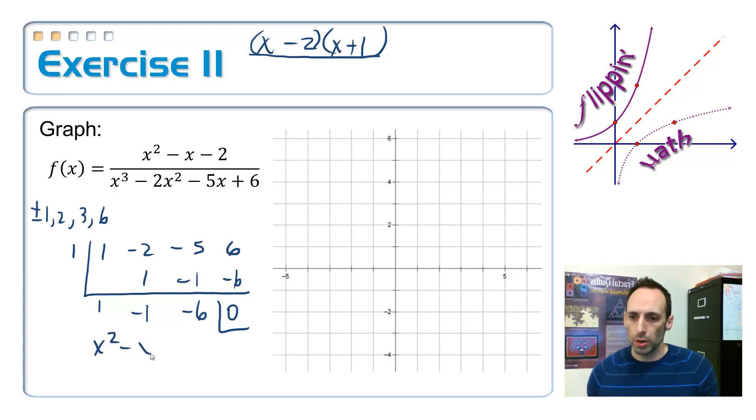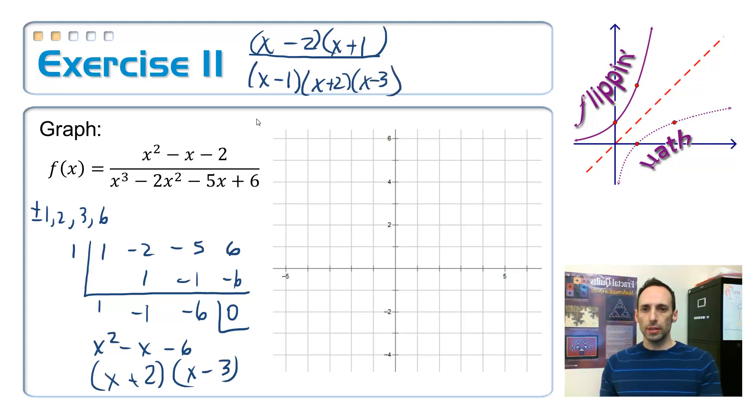Okay, so what I've got left over, x squared minus x minus 6. Let's factor that thing. We've got an x, x, man, that looks familiar. So, a 3 and a 2, positive and a negative. Okay, so here's all my factors. x minus 1 for the first one, x plus 2, and x minus 3. Does anything cancel out? No, they're all opposite signs.